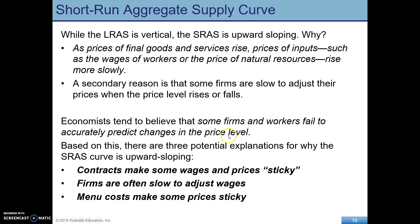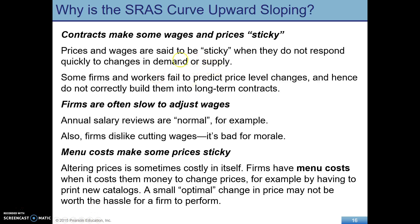A couple of reasons for this: as the price of final goods and services rises, the prices of inputs tend to rise more slowly. And some firms are slow to adjust their prices in response to a price level change. We'll also look at expectations about the price level — that's one of our shifters for the short-run aggregate supply curve. Why is SRAS upward sloping? Sticky wages and prices, often from contracts.